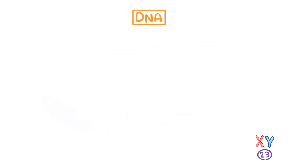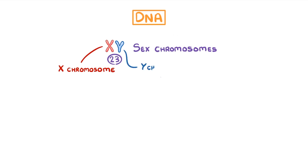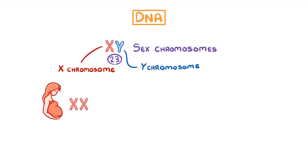The 23rd pair is a bit different though, as these are the sex chromosomes, of which there is an X chromosome and a Y chromosome. Women have two X chromosomes which makes them female, while men have one X and one Y and that makes them male.